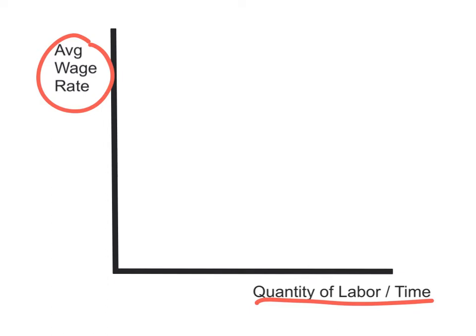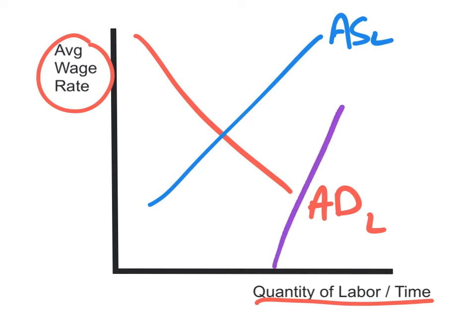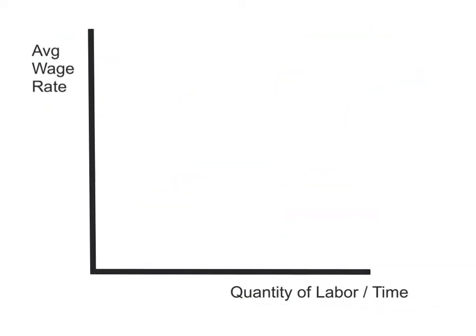We're going to use these to put together what's known as the aggregate demand for labor, and also the aggregate supply of labor. We'll talk about those in a few minutes. And we're also going to use them to put together something known as the total labor force.